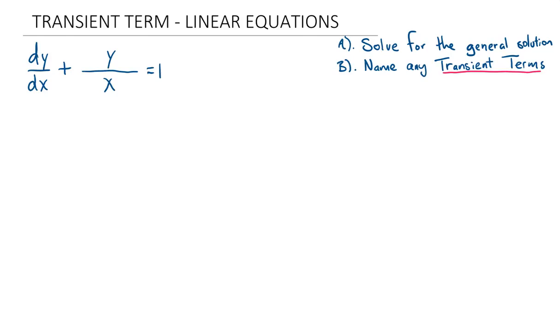This is a short video, but we're going to go over something pretty important, which is a transient term. I've written the following differential equation: dy/dx plus y over x equals 1, and we have a two-part question. Part A, solve for the general solution, and part B, name any transient terms in the solution.